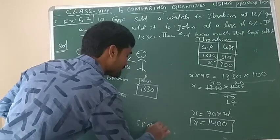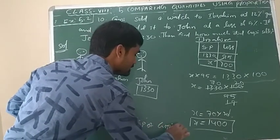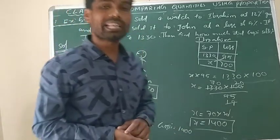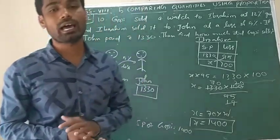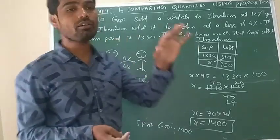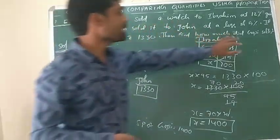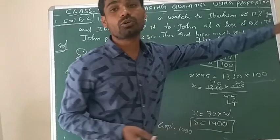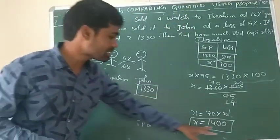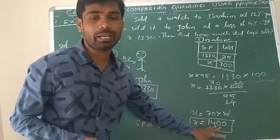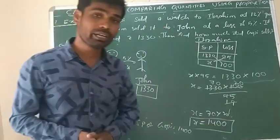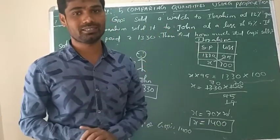Selling price of Gopi is 1400. But in the textbook they give 1250 rupees, which is the cost price of Gopi. But in the question, it asks how much did Gopi sell it for — that is the selling price. Selling price is 1400, and cost price is 1250. Don't be confused by the textbook answer.